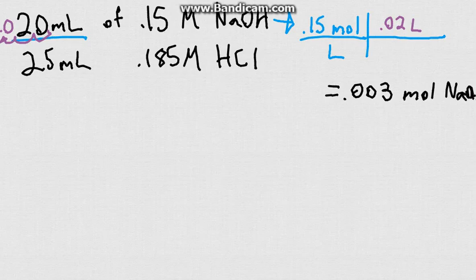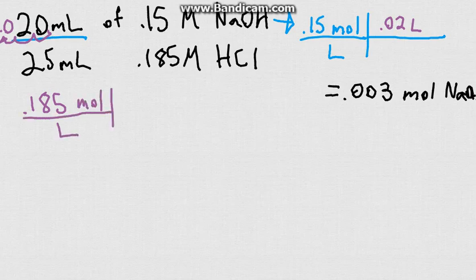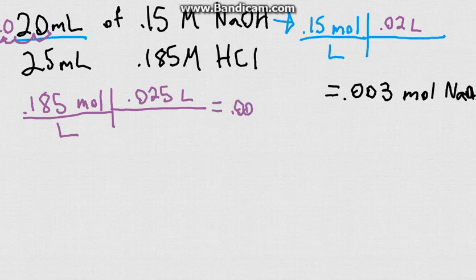And same thing goes for calculating the hydrochloric. So we've got 0.185 moles per liter. And what do we have to multiply that by? Well the 0.025 liters. And that will give us 0.004625 moles.